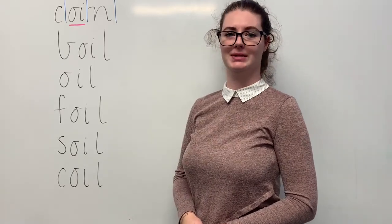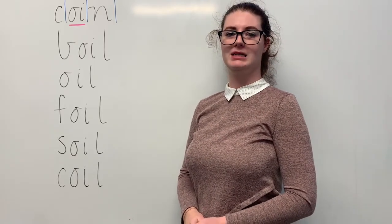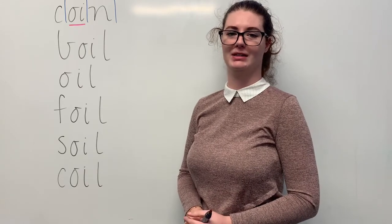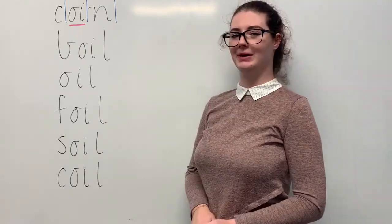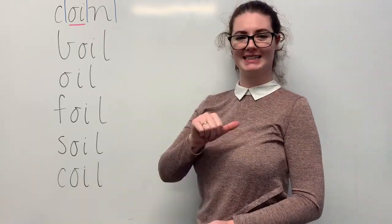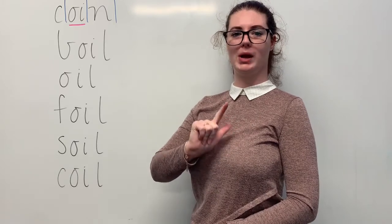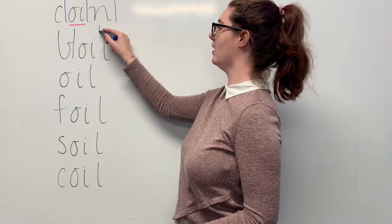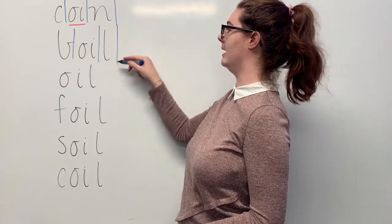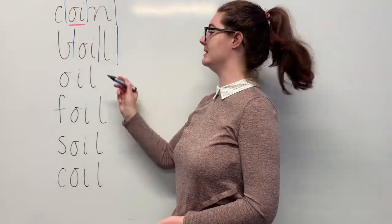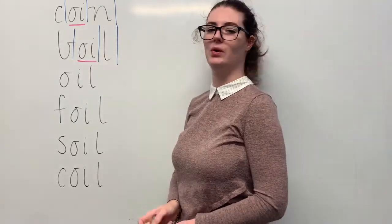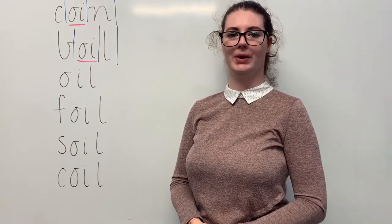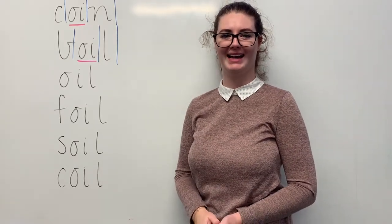Our next word is boil. Say boil. I need to boil the kettle to make tea and coffee for my parents. The sounds in boil are, together, b, oi, l. The letters in boil are b, o, i, l. The part we need to remember is the oi digraph making the oi sound. Can you teach it to me? Boil: b, o, i, l.